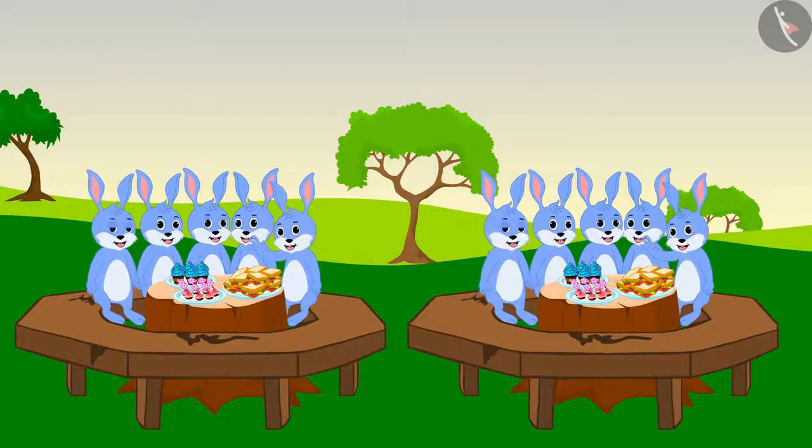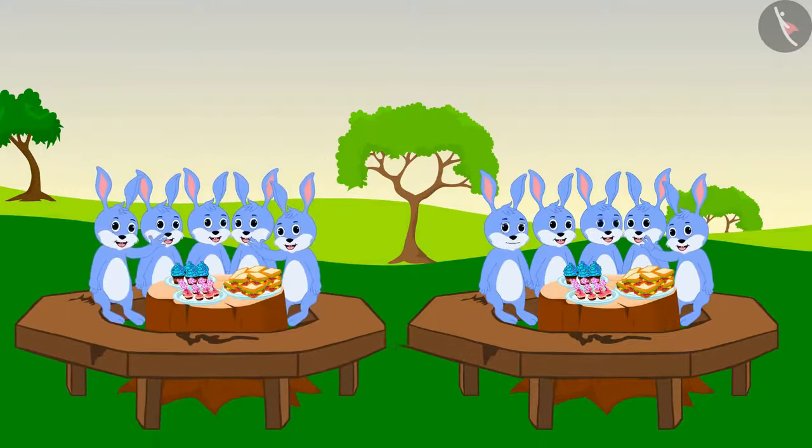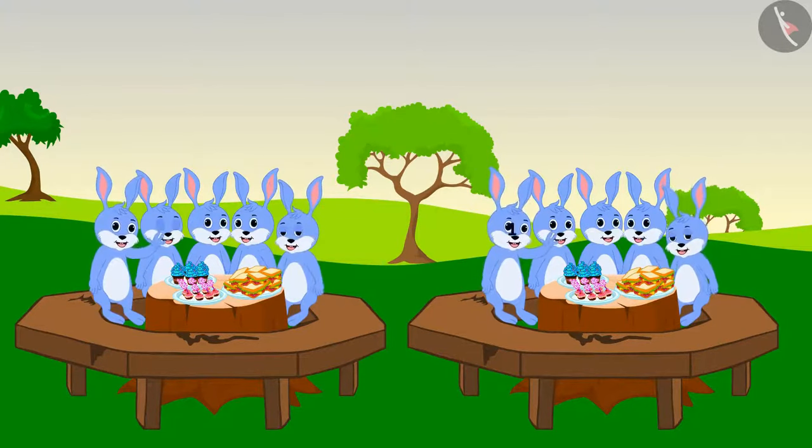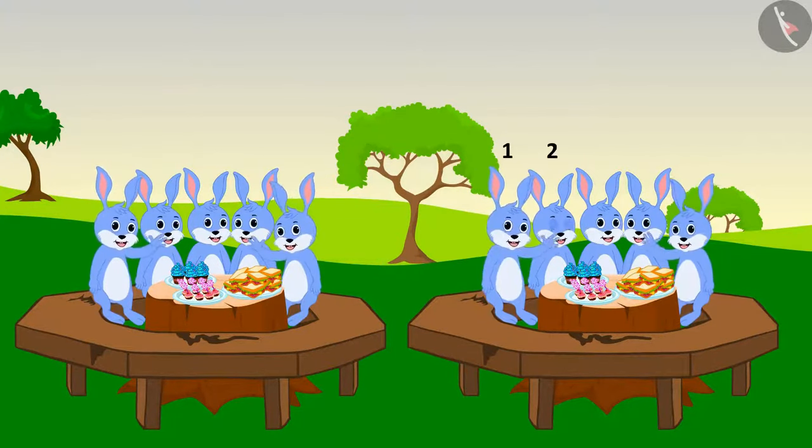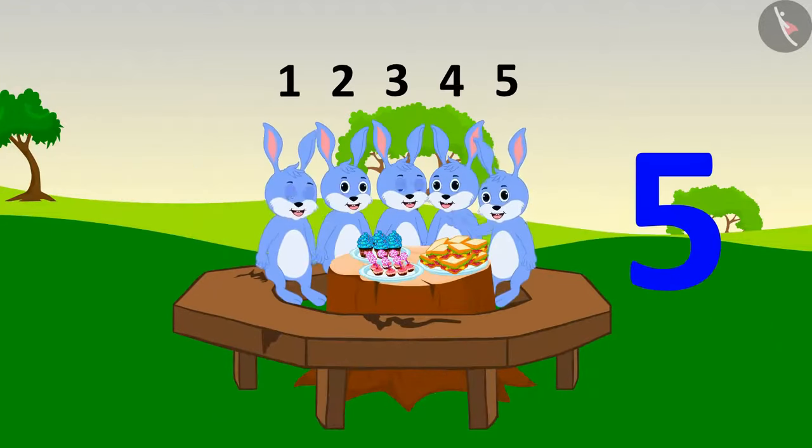Let us see how the rabbits are sitting. There are ten rabbits and they are sitting in two groups. Each group has one, two, three, four, five rabbits seated in them.